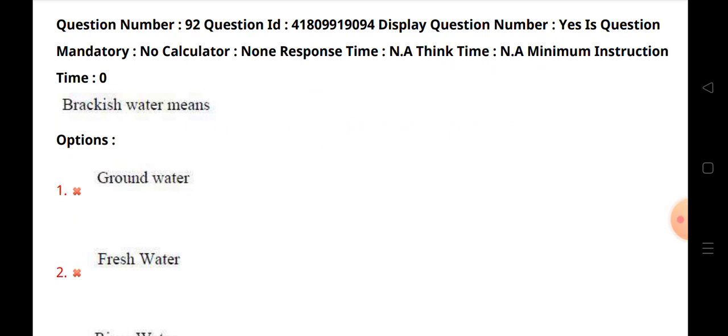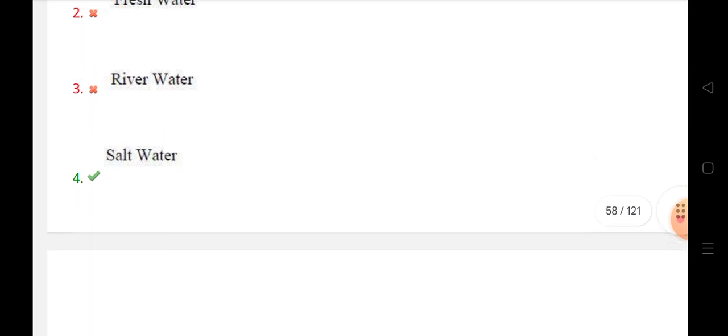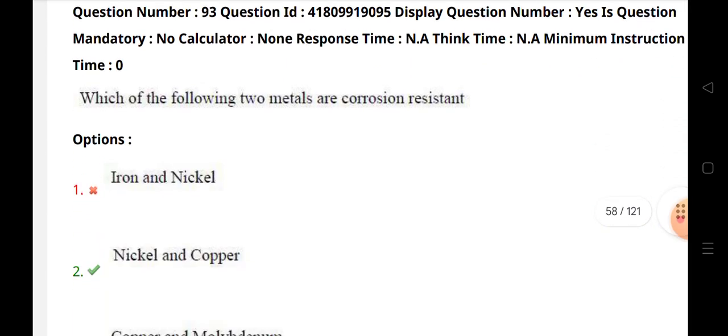Brackish water means salt water. Which of the following two metals are corrosion resistant? Nickel-copper.